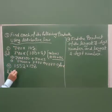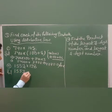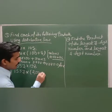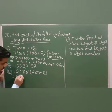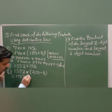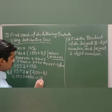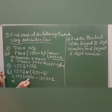Similarly, for the next question: 10,553 into 198. Since 198 is nearest to 200, write it as 200 minus 2. Using the distributive law: 10,553 into (200 minus 2) equals 10,553 into 200 minus 10,553 into 2.